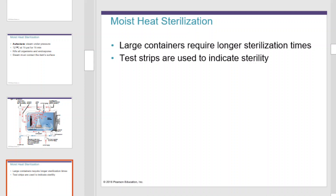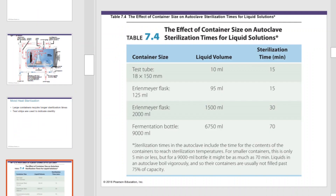Large containers require longer sterilization times. Test strips can be used to indicate sterility as opposed to just relying on the timer on the autoclave. The effect of container size on autoclave sterilization times is listed in a reference table.